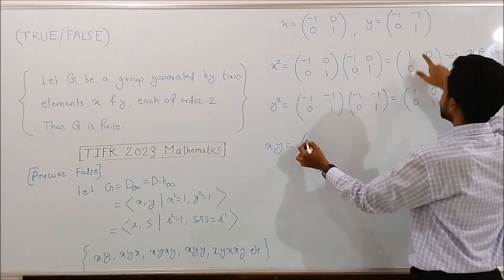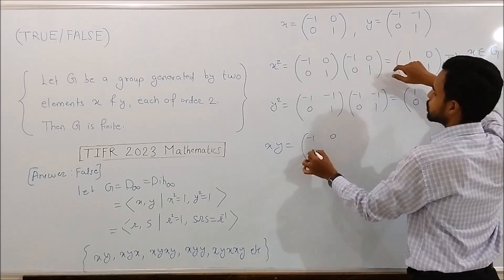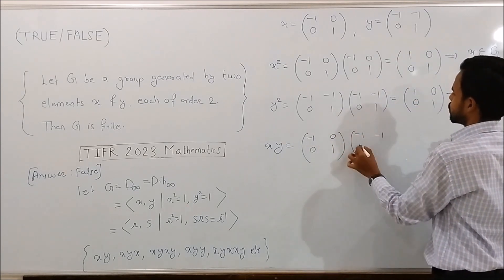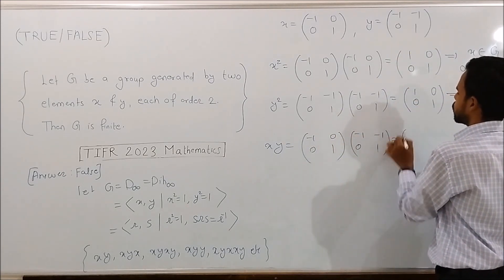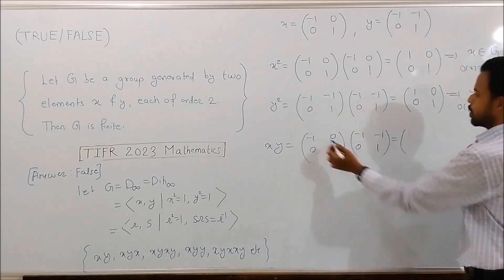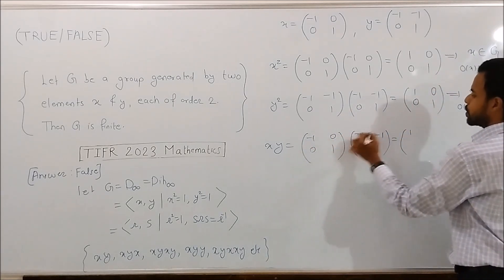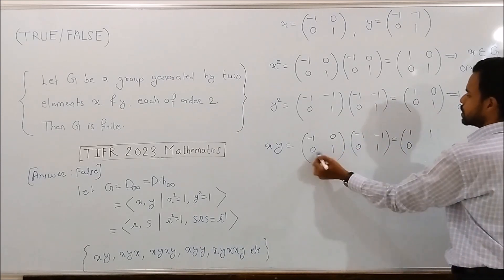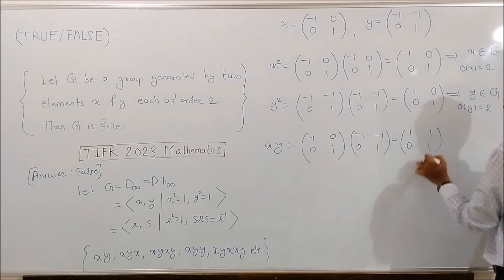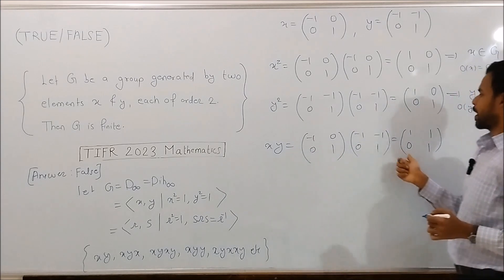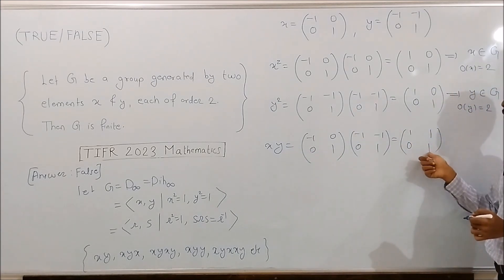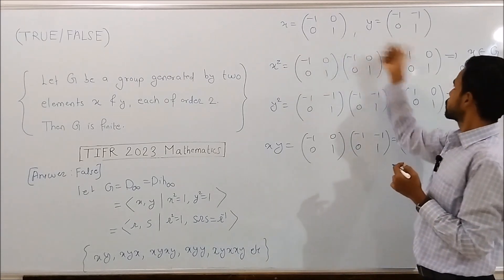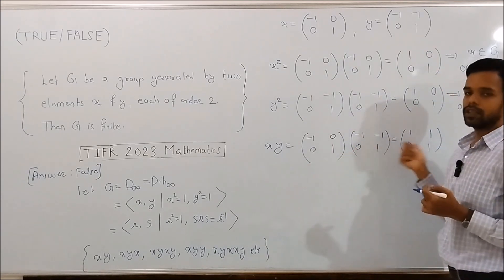Performing the matrix multiplication — x is the matrix [−1, 0; 0, 1] and y is the matrix [−1, −1; 0, 1] — xy will be the matrix: first row into first column gives 1, first row into second column gives 1, second row into first column gives 0, second row into second column gives 1. So xy is the matrix with entries 1, 1, 0, 1. By the closure property of the group, since x and y belong to G, xy must belong to G.